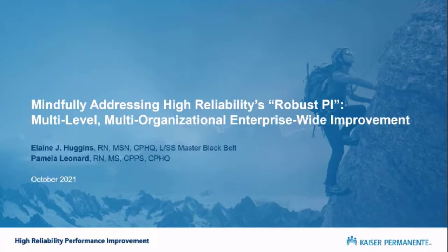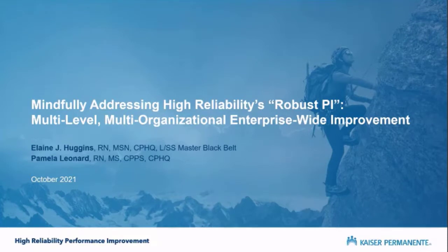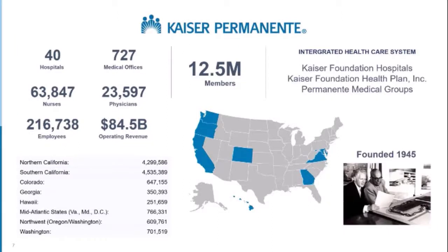Thank you. Good afternoon and good morning to everyone. Thank you for joining. As the presentation states, Elaine and I are happy to share our work in mindfully addressing high reliability and robust PI across our organization. So as you may not know, Kaiser Permanente is an integrated healthcare system made up of our health plan, hospitals, and our Permanente medical groups. We serve approximately 12.5 million members across the U.S., located in several states. Our largest market is in California, but we have several different regions or markets throughout the U.S.